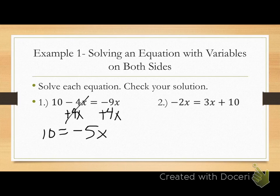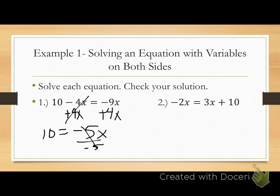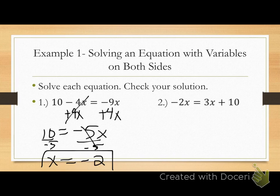After collecting the variables, I collect the constants on the other side. I don't have any other constants mixed with my variables, so that step is already done. Last step: isolate the variable. Divide by negative 5 on both sides. x equals negative 2. Any questions on number 1?